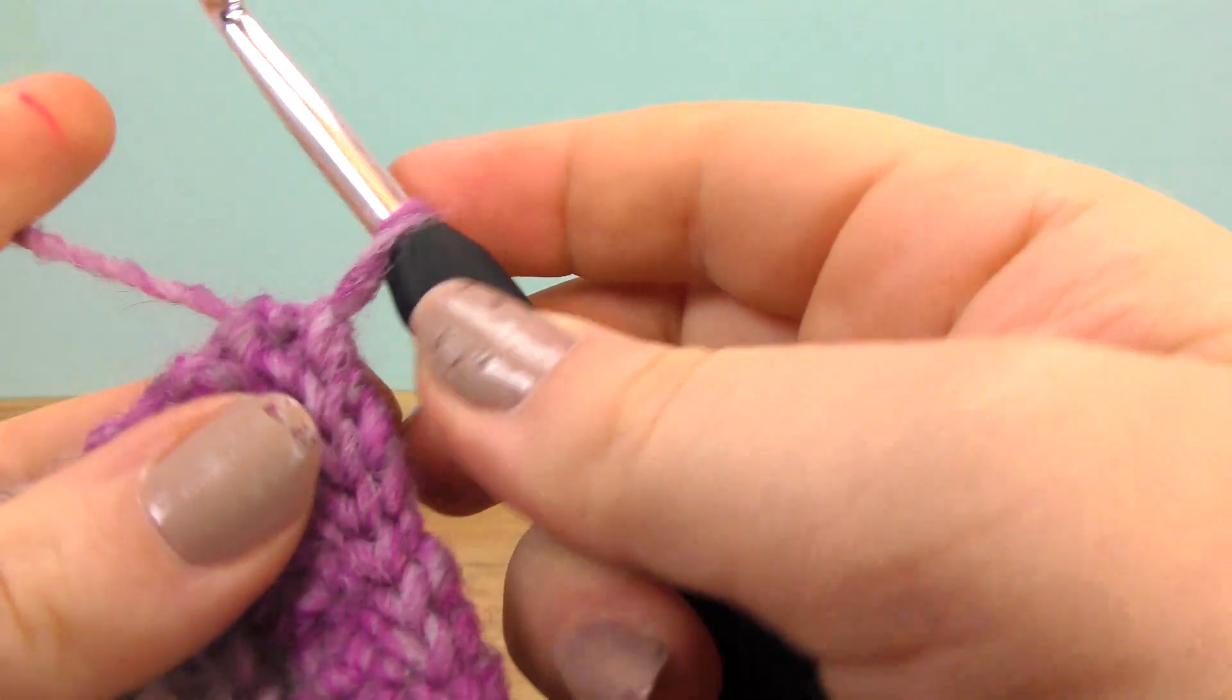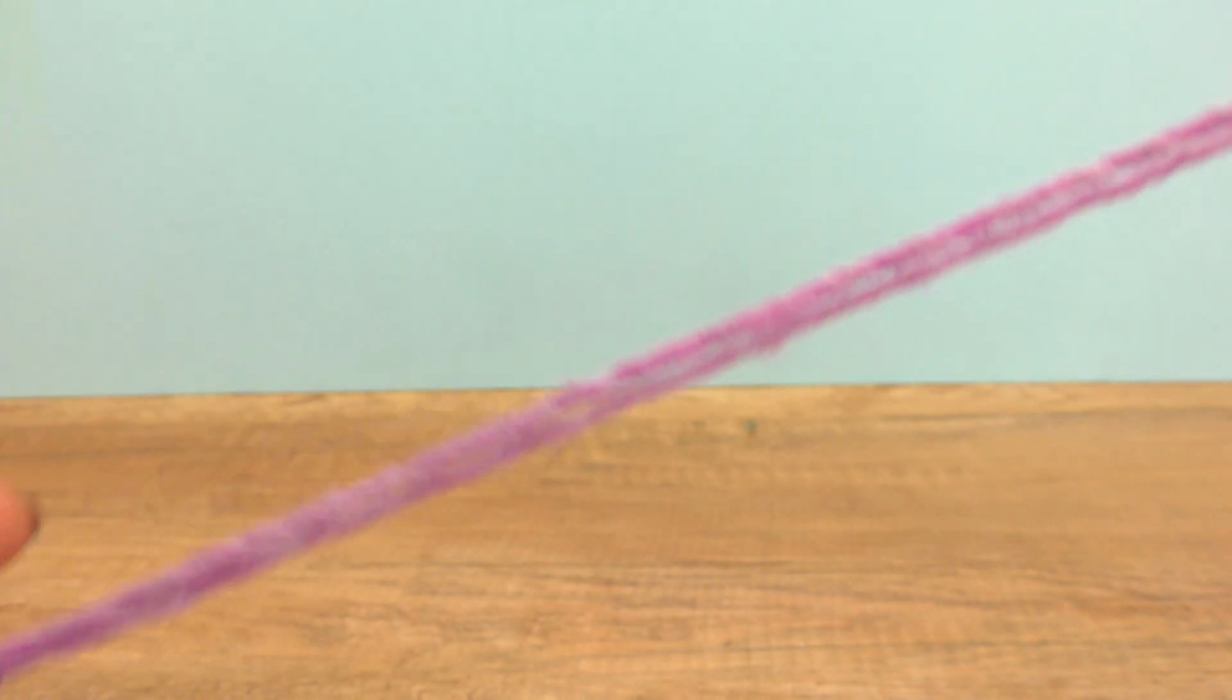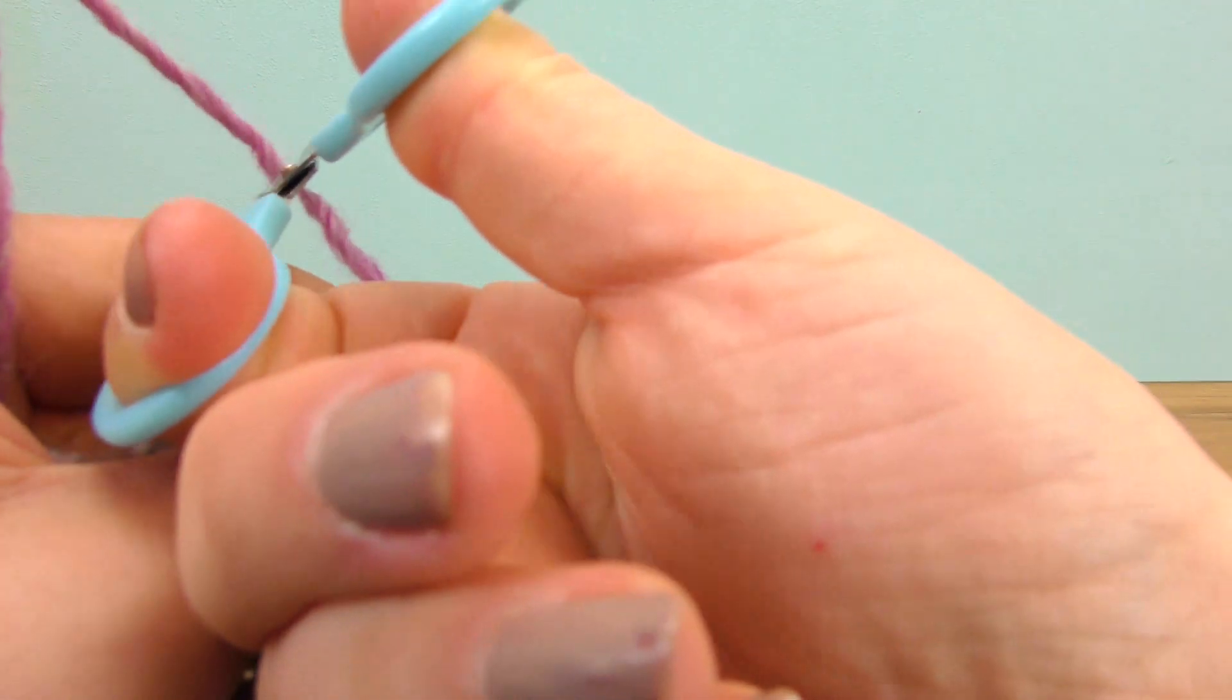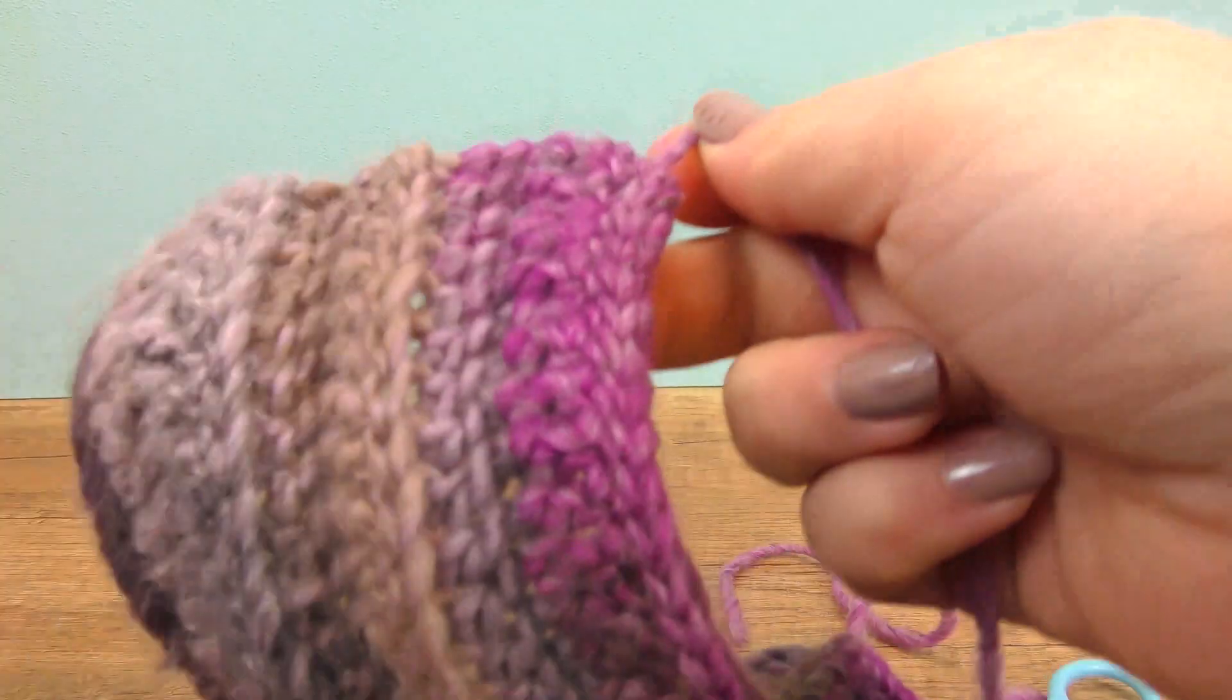At the end of the row, we pull the thread a little bit longer, we cut it off there and pull through.